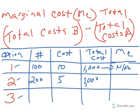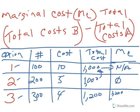Our marginal cost here is the total cost of option two minus the total cost of option one, which in this case would be zero. For option three, let's say we could produce 300 units at a cost of $4 each, which gives us a $1,200 total cost. The marginal cost for option three is taking the total cost of option three, $1,200, minus the total cost of option two, $1,000, which gives us a marginal cost of $200.